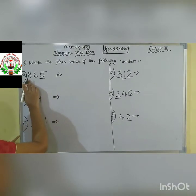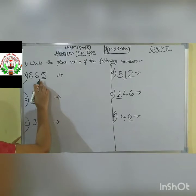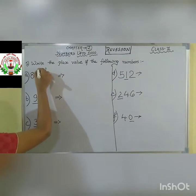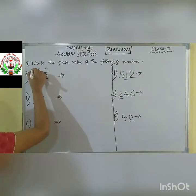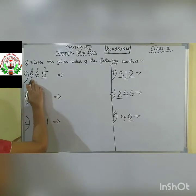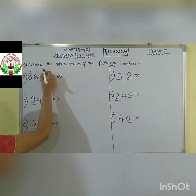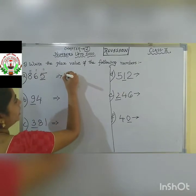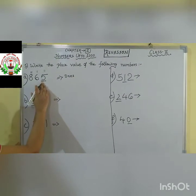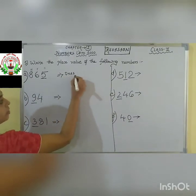Let us do that with the first question A. 865. So first, this place is of 1's, then this place is of 10's, and the next place is 100. So we are asked here about 5. Number 5 is in the place of 1's. So we will write down here as 1's. This 5 is the digit coming under the place value 1's, so the place value for this is 1's.